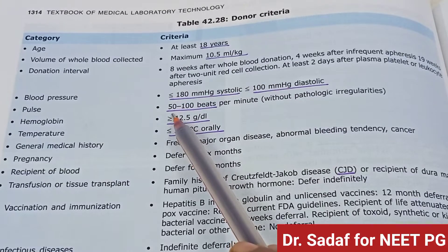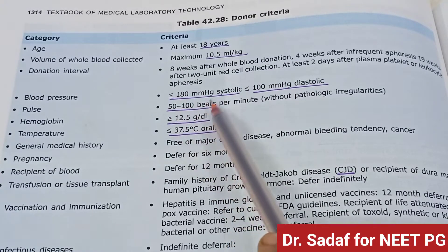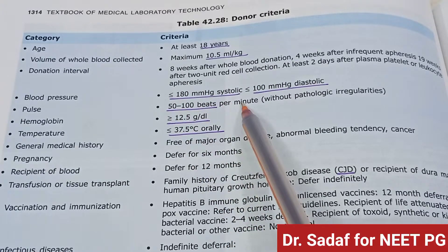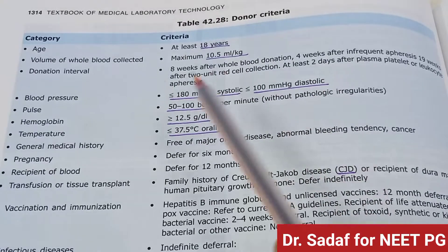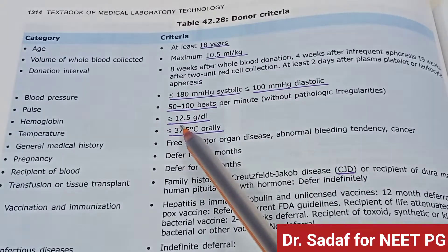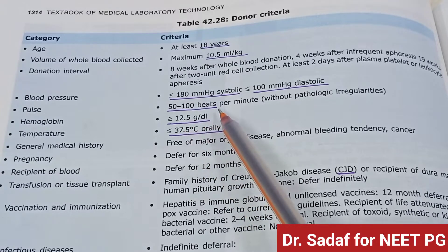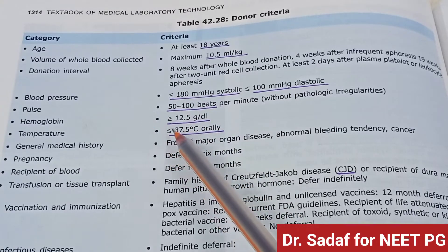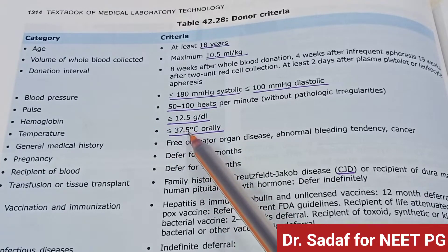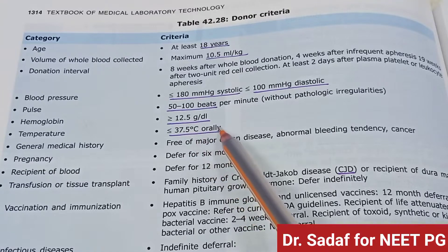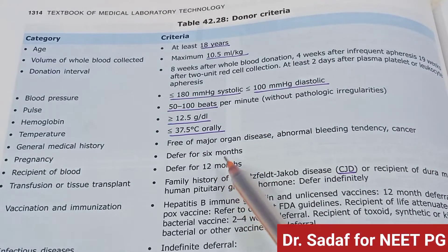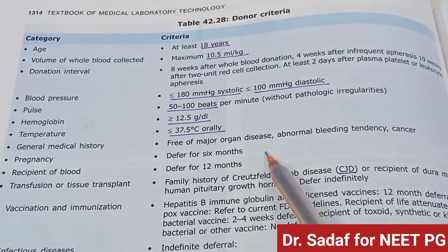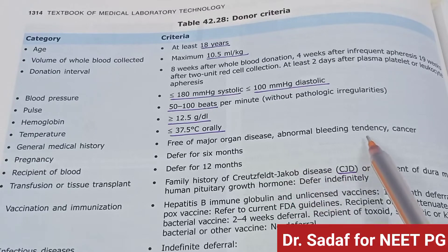Pulse rate should be regular, 50–100 beats per minute, without any pathologic irregularities. Hemoglobin of the live-in donor should be equal to or greater than 12.5 gram per deciliter. Temperature should be equal to or less than 37.5 degree Celsius orally. General medical history should be free of major organ disease.